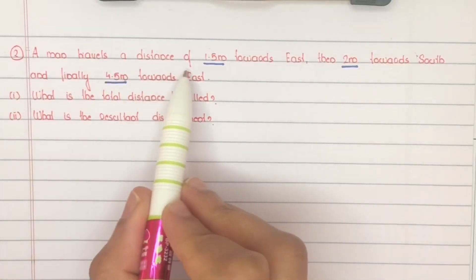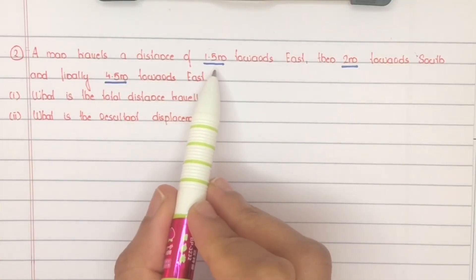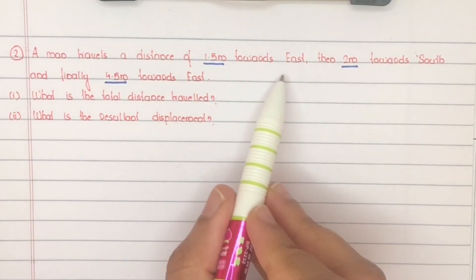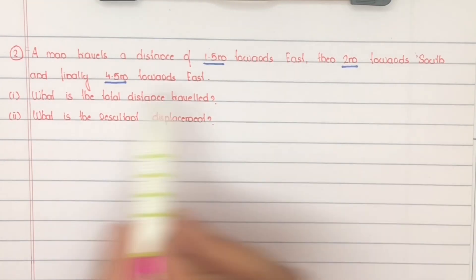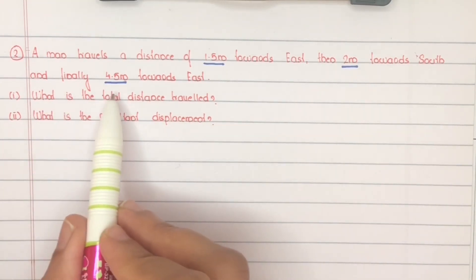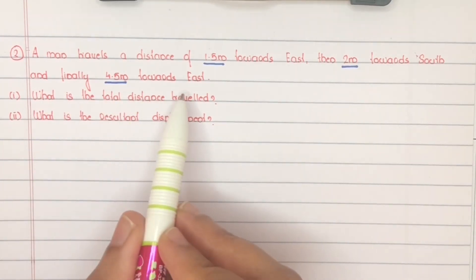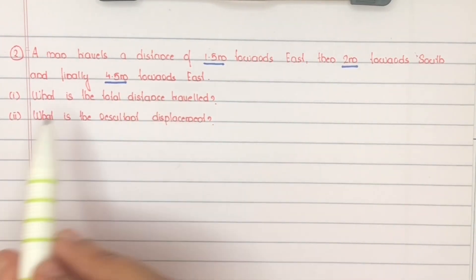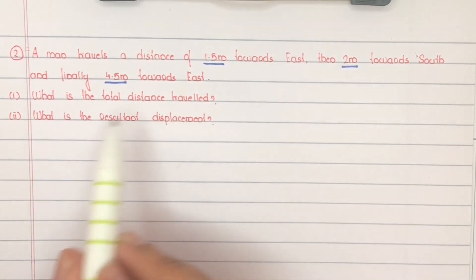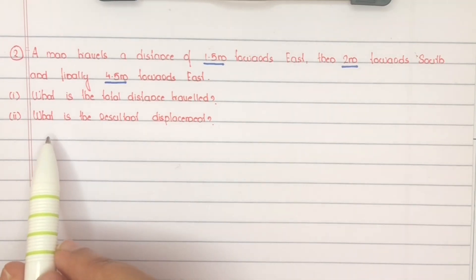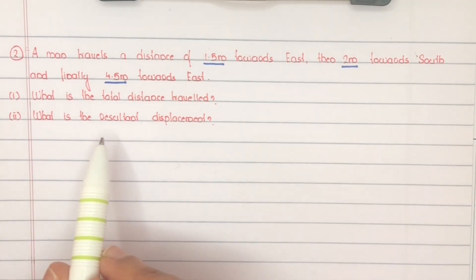A man travels a distance of 1.5 meter towards east, then 2 meter towards south, and finally 4.5 meter towards east. What is the total distance traveled, and what is the resultant displacement?